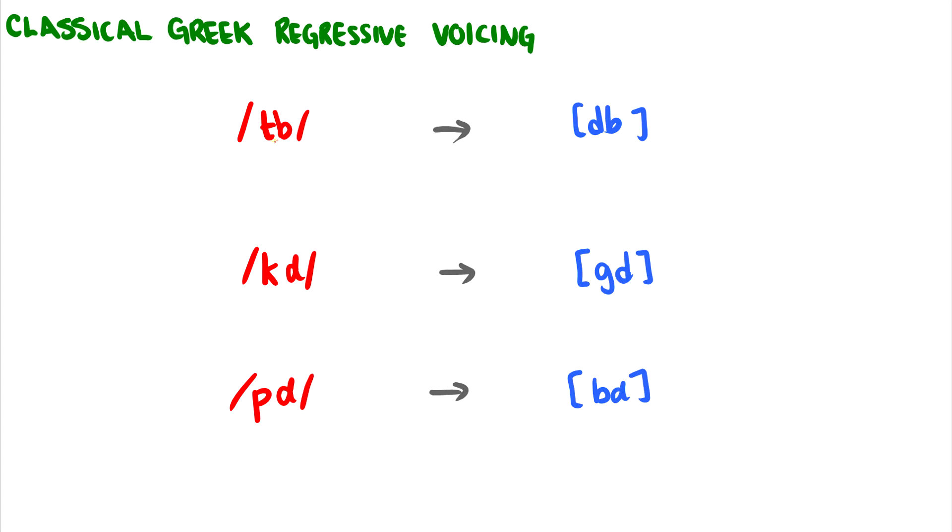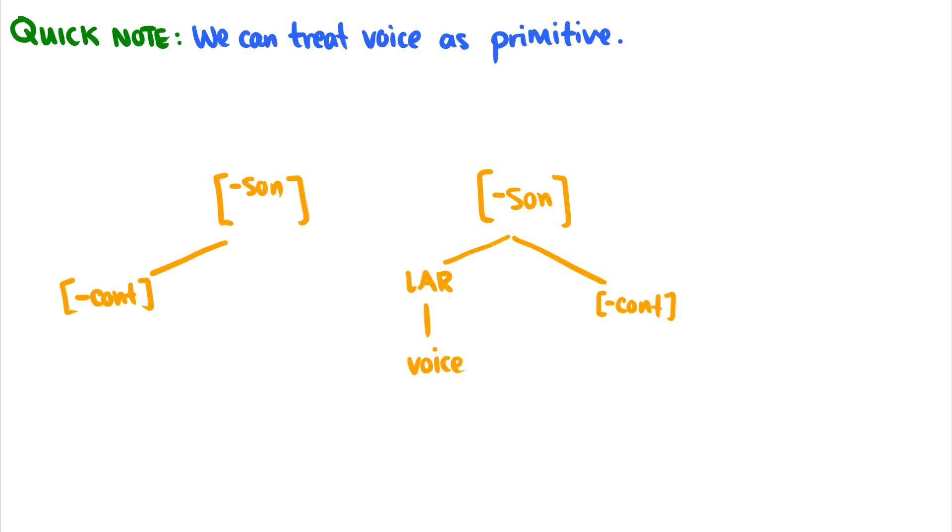So this /tb/, the /b/ essentially sends its voice to the previous /t/. With /d/ and /k/, the same thing happens, the /k/ becomes a /g/. And then with /d/ and /p/, well that /d/ is going to give voicing to /p/ and it will become /b/. So how do we represent this with feature geometry? Well, from now on we're going to treat voice as primitive, meaning that we don't need plus voice or minus voice. We can just have voice there, and if it's not there then we delink it or assume it's minus voice.